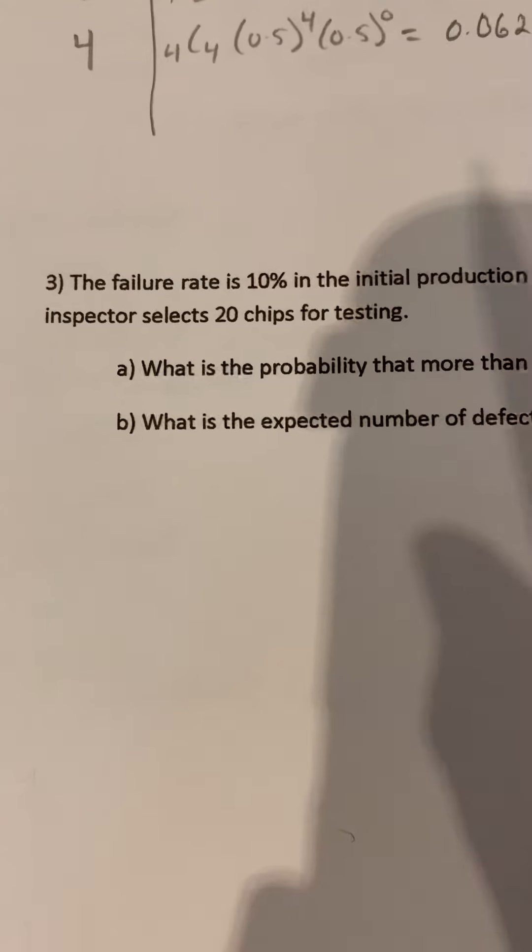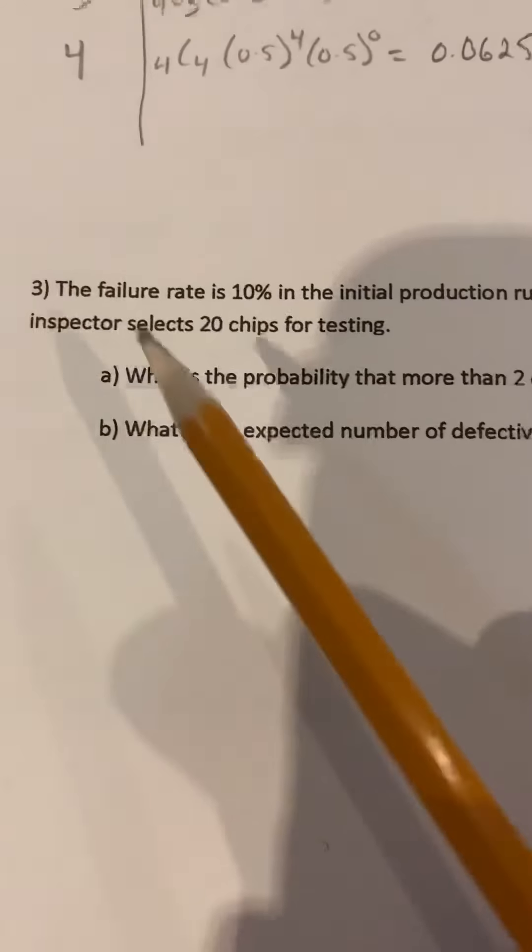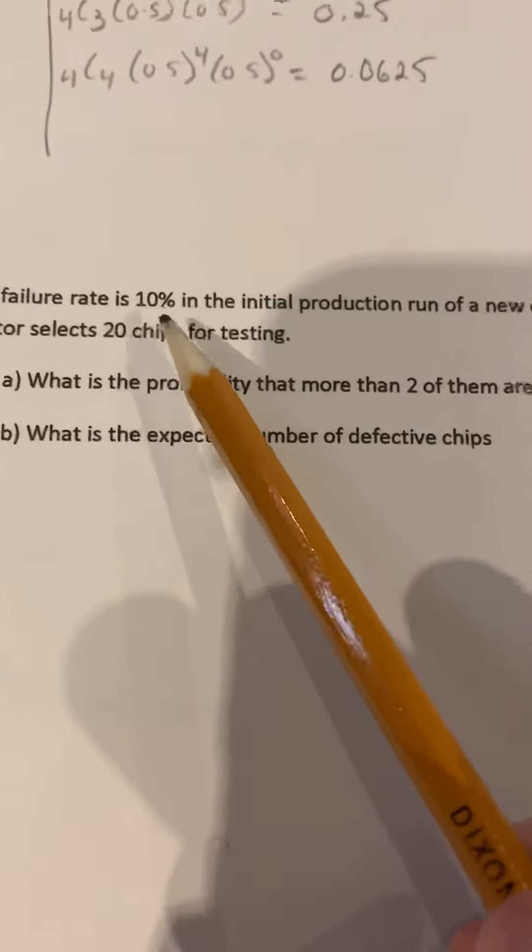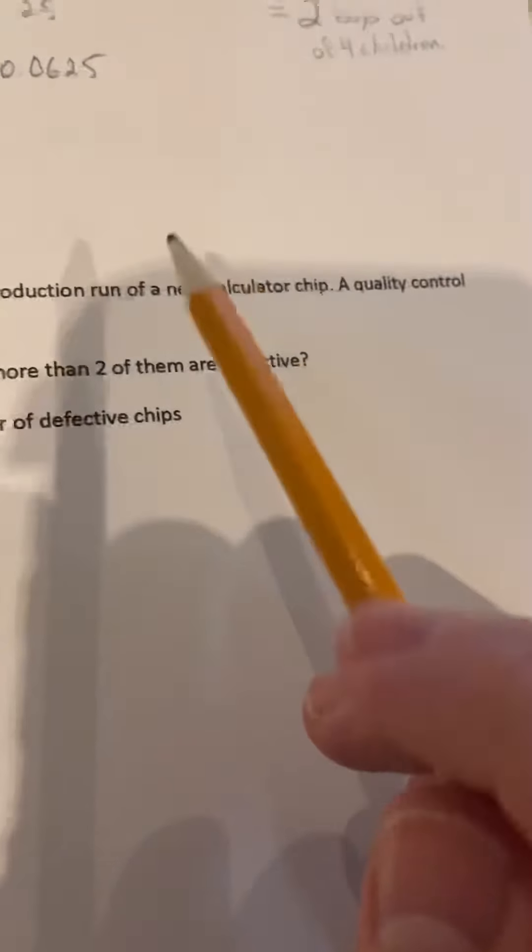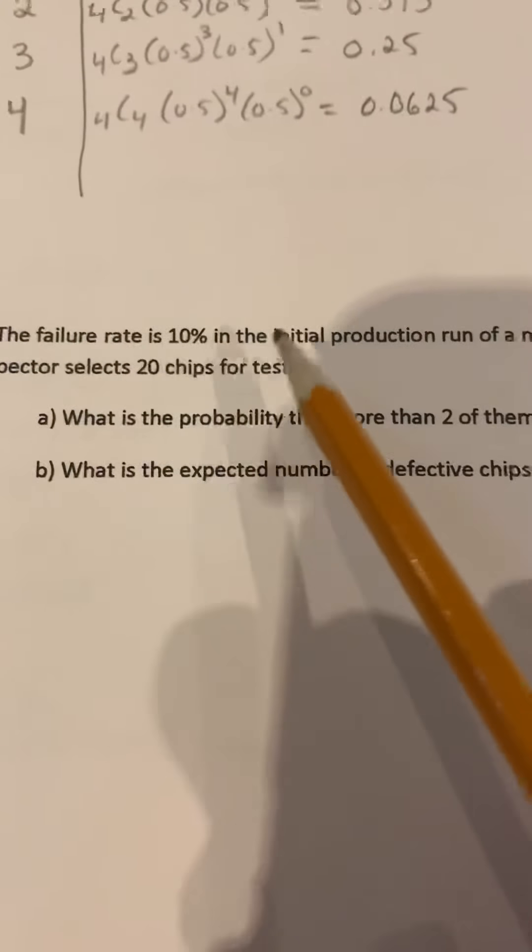Okay, question 3 from section 4.3, Binomial Distribution. The failure rate is 10% in the initial production run of a new calculator chip. A quality control inspector selects 20 chips for testing.